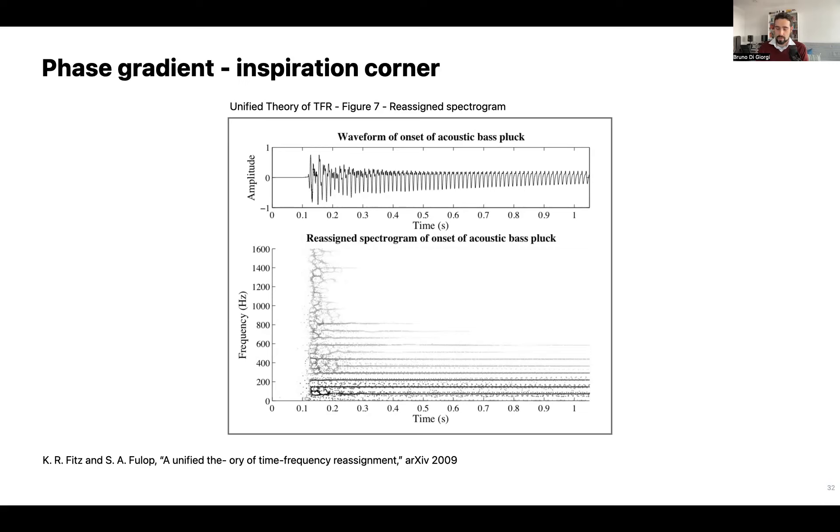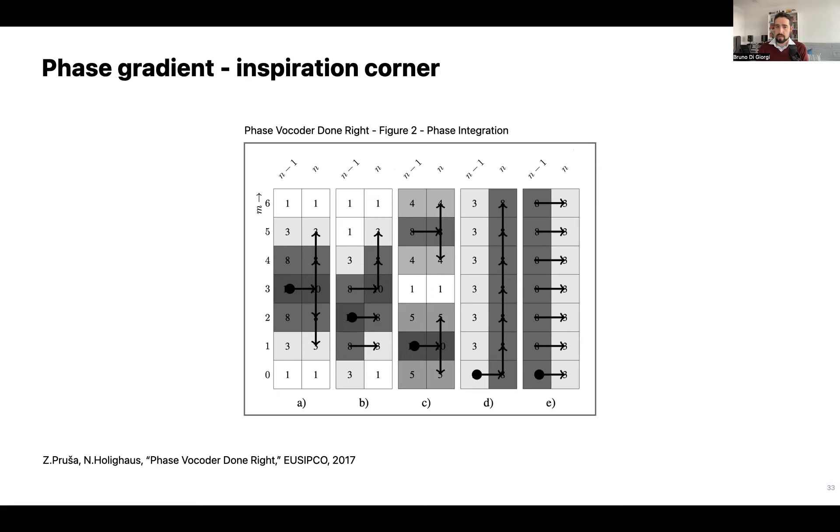Finally, some recent updates on the time-scale modification literature, for example, this paper Phase Vocoder Done Right, where they propose this phase integration mechanism which propagates phase either horizontally or vertically based on the algorithm that they propose. And the fact that they propagate phase in both directions is an upgrade on the historical default phase vocoder algorithm, which just propagates phase horizontally. We use a similar strategy propagating phases horizontally and vertically in our model, but it's much simpler than the one proposed in this paper. From our early experiments, it sounded like working very well, but we didn't compare them formally, so we left that as future work.